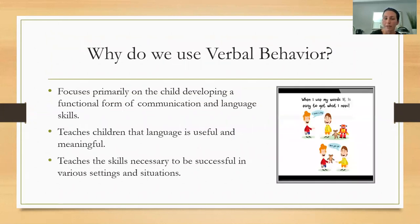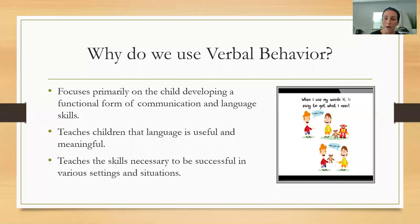Why do we use verbal behavior? Why is it so important in teaching children with autism? First, it focuses primarily on the child developing a functional form of communication and language skills — building communication around a child who may have very limited or no communication skills. It teaches children that language is useful and meaningful. Through verbal behavior, children learn that if they ask for something, they get it — giving them control over their environment and motivation to communicate. It also teaches the skills necessary to be successful in various settings, so children can ask for things both at school and at home.